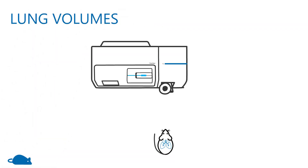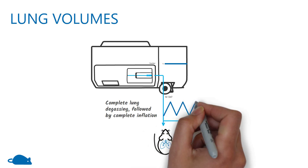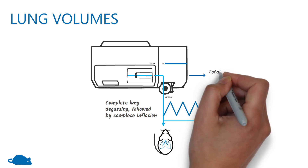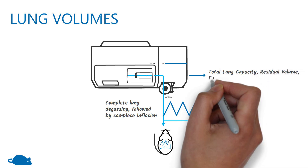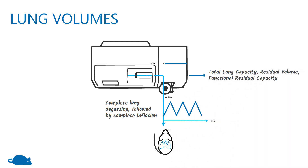In the lung volumes measurement, the lungs are completely degassed after ventilating with pure oxygen and then reinflated back to total lung capacity. The flexi-vent then calculates the total lung capacity, residual volume, and functional residual capacity.